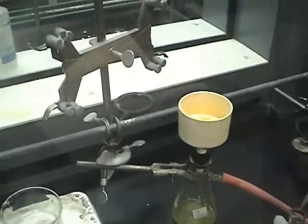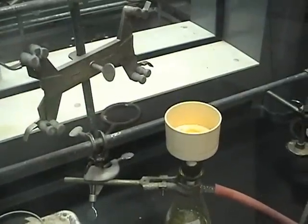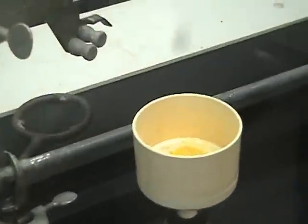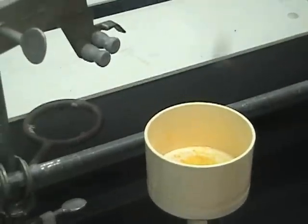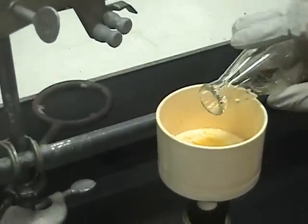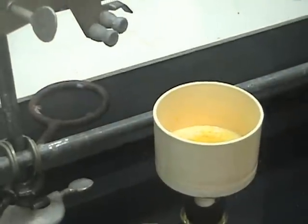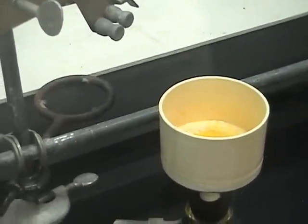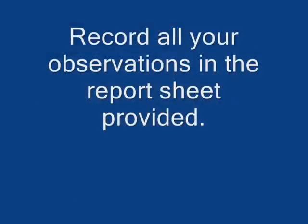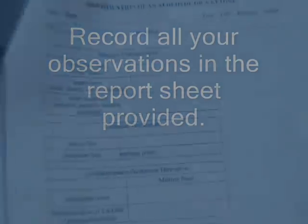Once you have collected the crystals by vacuum filtration, you are then going to recrystallize them with a minimum amount of hot 95% ethanol. Then take the melting point of your recrystallized product. Record all your data, and at the end, see if you can identify your unknown and draw its structure.